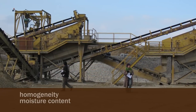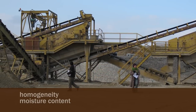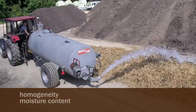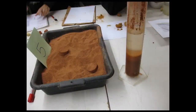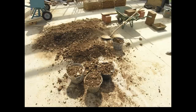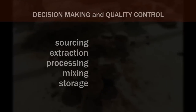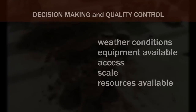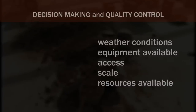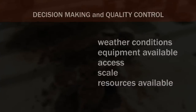During the whole process, from extraction to preparation and mixing, there is regular quality control of the components and the mix. Samples are taken regularly. Throughout the production of earth building materials, choices are made at every stage: sourcing, extraction, processing, mixing and storage. Workers, supervisors and designers have to know the quality controls and the parameters influencing the choices at all of the steps.